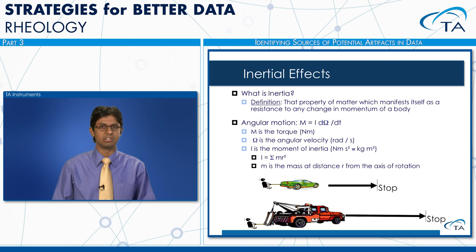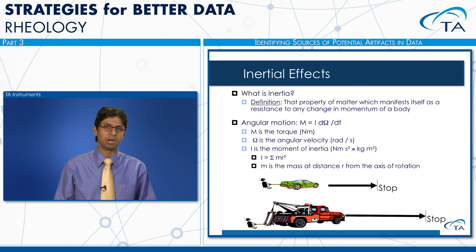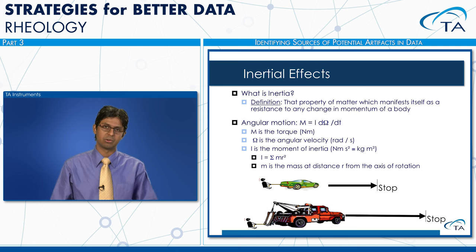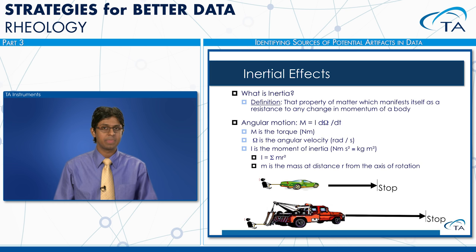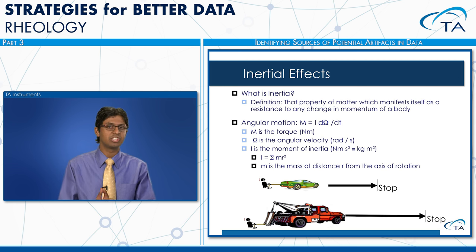The first artifact we're going to look at is inertial effects. Inertia is defined as that property of matter which resists any change in the momentum of an object. Inertial effects are important in oscillation experiments because we're constantly accelerating the rheometer geometry and shaft back and forth when applying a sinusoidal strain. Think about comparing a small sports car and a large truck and how easy it is to change direction on the smaller sports car compared to a large heavy truck.